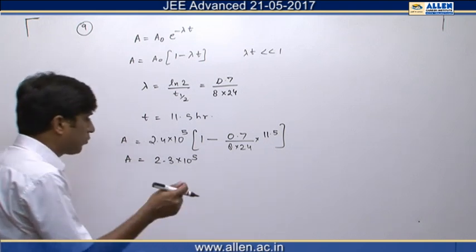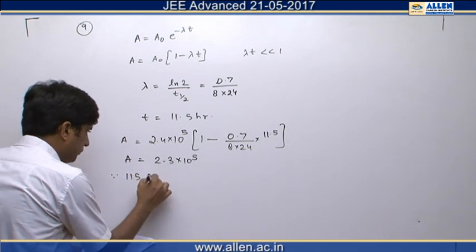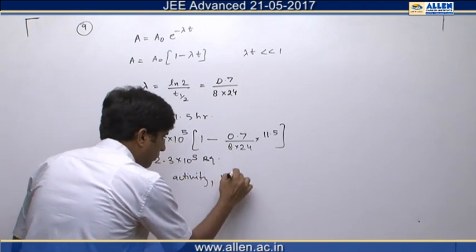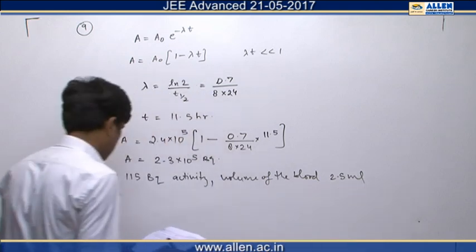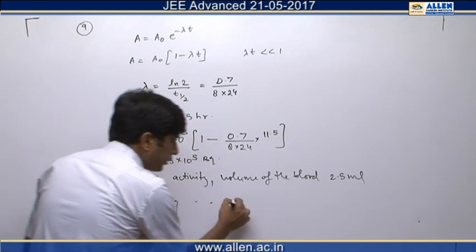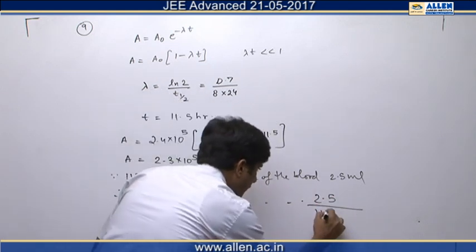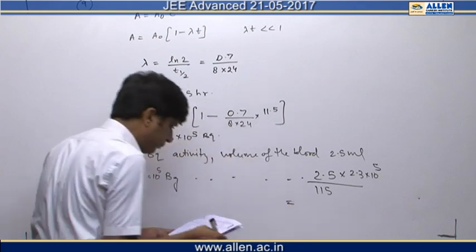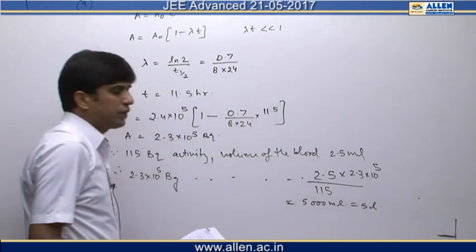We use the unitary method to find the total blood volume. Since 115 becquerel of activity corresponds to a blood volume of 2.5 mL, therefore 2.3×10⁵ becquerel will correspond to a blood volume of (2.5 divided by 115) into 2.3×10⁵, which equals 5000 mL or 5 litres. Therefore the correct answer is 5.